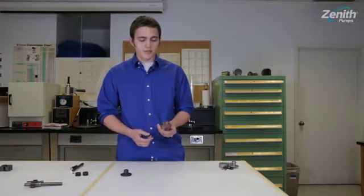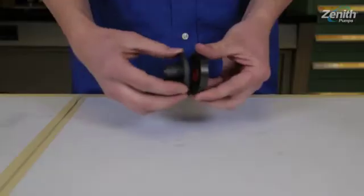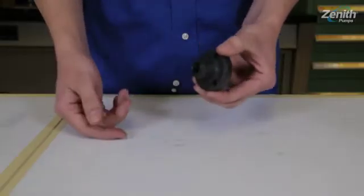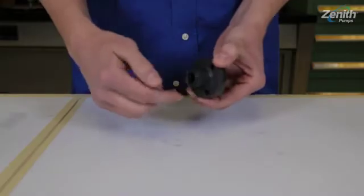The seal housing features the rabbet diameter which is used to pilot off the rear seal. This allows for close radial positioning relative to the shaft.